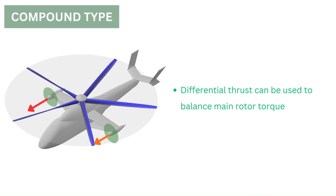A compound helicopter like the Airbus Racer does not need a tail rotor, as it can use differential thrust from the two additional propellers to counteract the main rotor torque.